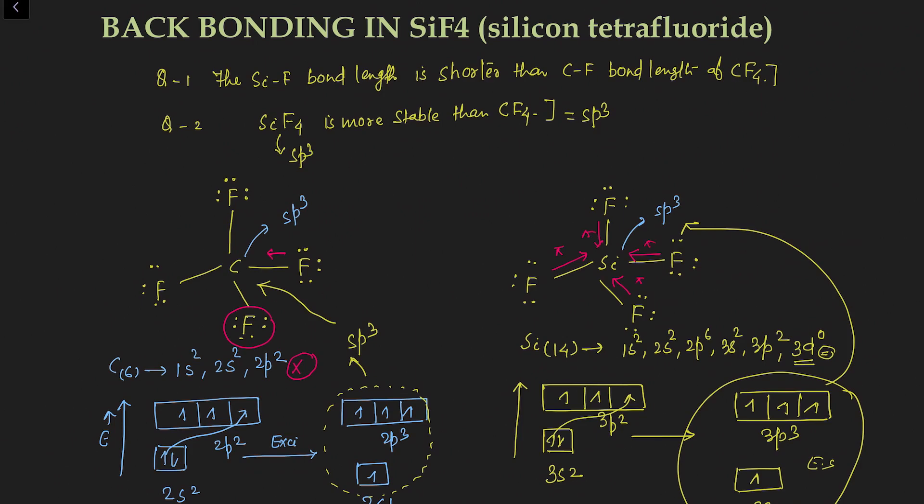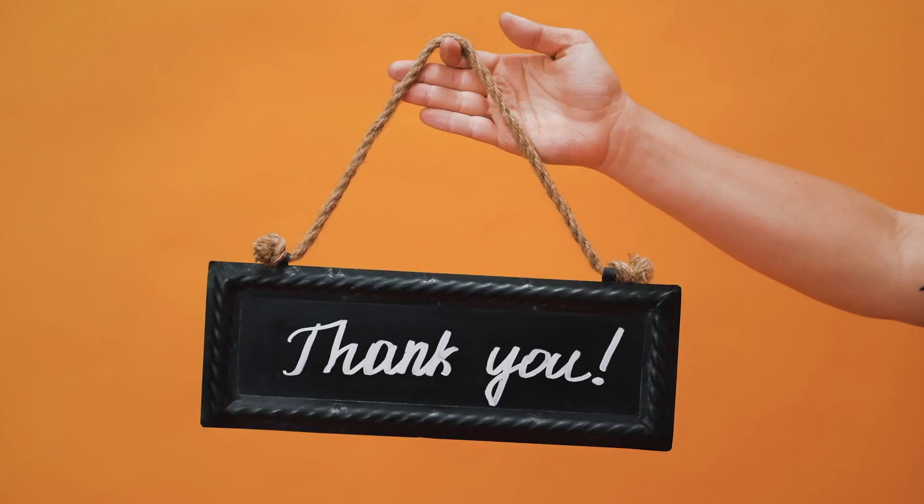Because of the presence of this pi bond and multiple bond character, the stability of SiF₄ automatically increases. That's why SiF₄ is more stable than CF₄. I hope everyone understands back bonding in silicon tetrafluoride with respect to carbon tetrafluoride. Thank you very much — like, share, and subscribe to my channel.